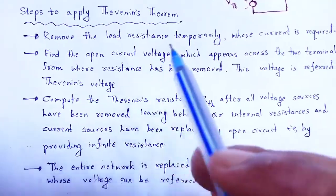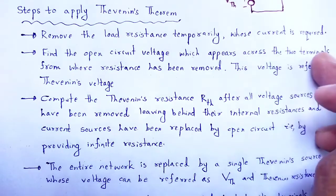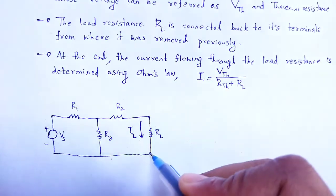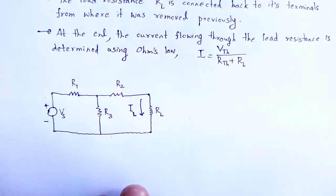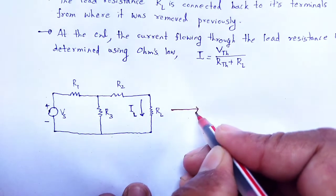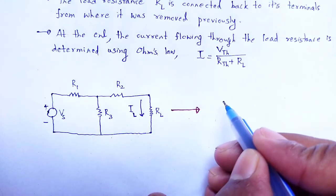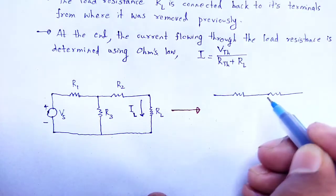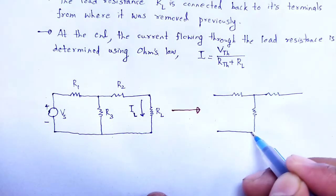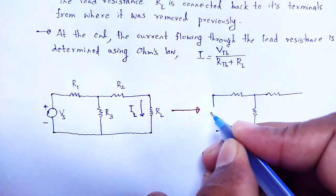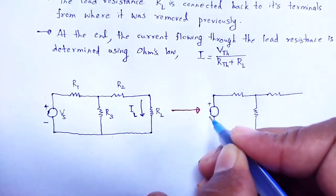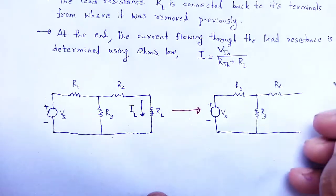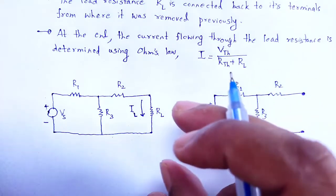First, remove the load resistance temporarily, whose current is required. We have to calculate the load current through this point. Now we remove the load resistance. These are the steps we have to follow to find out IL — with Vs, R1, R2, R3, and the potential across this.